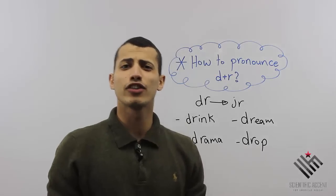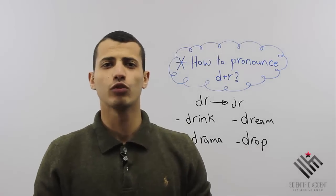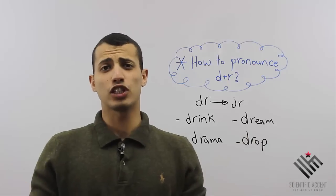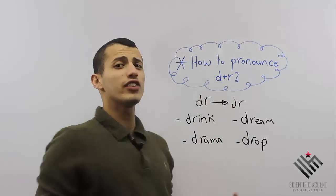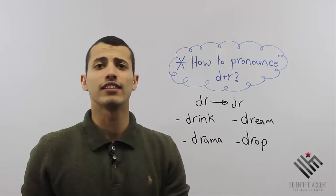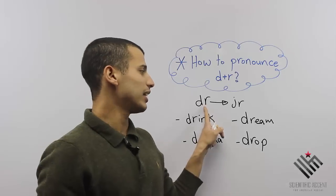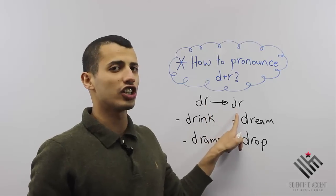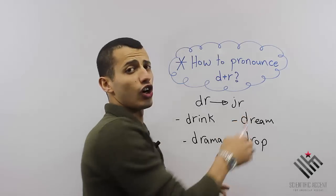Hello, today we're going to talk about the 'dr' sound. How can we pronounce D plus R? Whenever you see D plus R, how can you pronounce it? Well, D plus R is 'juror', like J plus R.